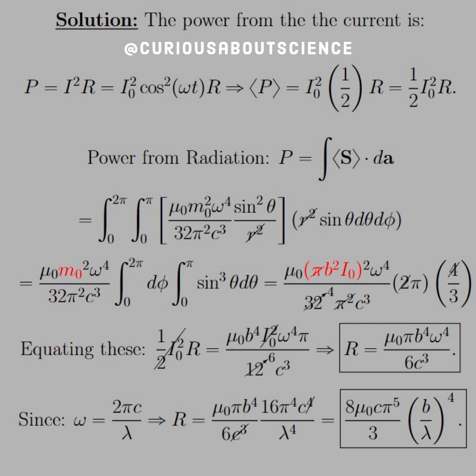But now that we have to divide over the one half I0 squared, we see that the I's cancel, much like the Q's canceled in the electrical case, but that one half reduces everything, or reduces that 12 to a 6. So we find that our resistance is equal to mu0 pi, B to the 4th, omega to the 4th, 6C cubed.